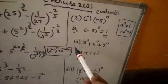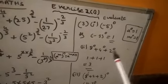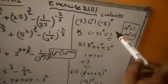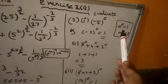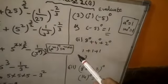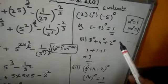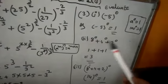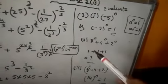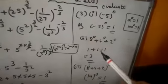Next, second question: 8 to the power of 0, plus 4 to the power of 0, plus 2 to the power of 0. Any number to the power of 0 equals 1. So 8 to the power of 0 is 1, plus 4 to the power of 0 is 1, plus 2 to the power of 0 is 1. So 1 + 1 + 1 = 3. The second one answer is 3.